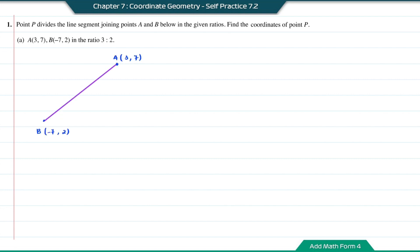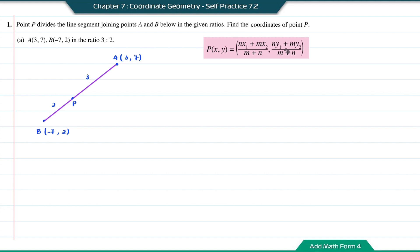For question A, this is the line segment AB. Based on the ratios, A to P the ratio is equal to 3, and from P to B the ratio is equal to 2. To find the coordinate of P, which is the divisor of a line segment, we refer to the section formula.